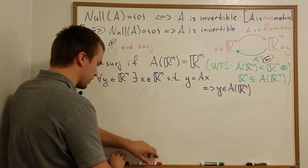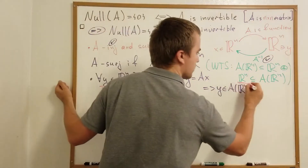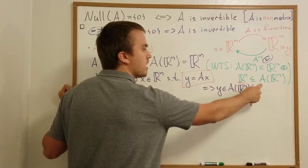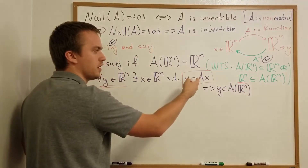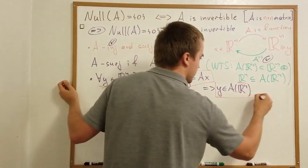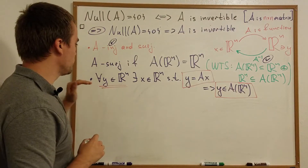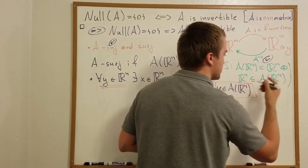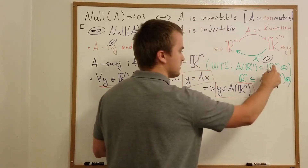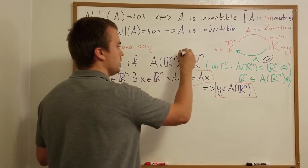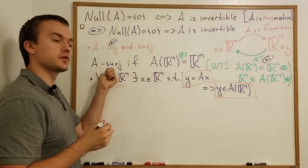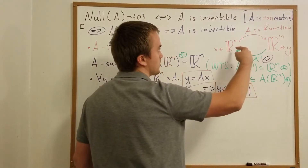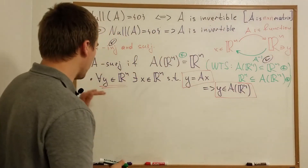So my goal is to show that for any Y in Rn there exists X such that Y equals A(X). If I show this, I get that Rn is a subset of A(Rn), and combined with the other inclusion, A(Rn) equals Rn, giving us that A is surjective. Let me use a constructive proof to show this.